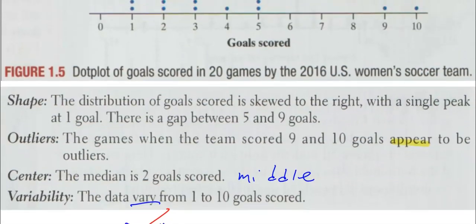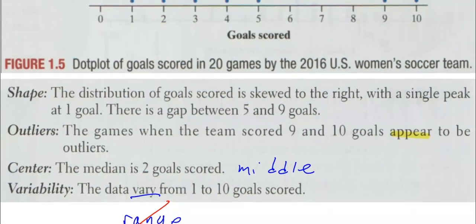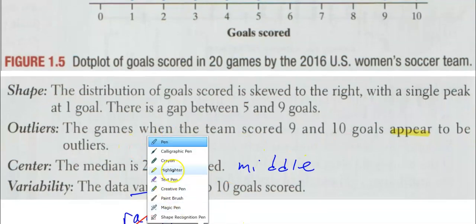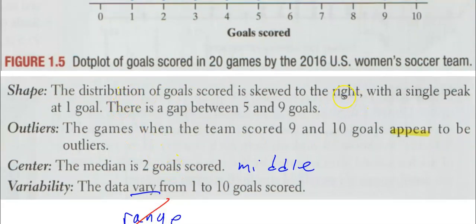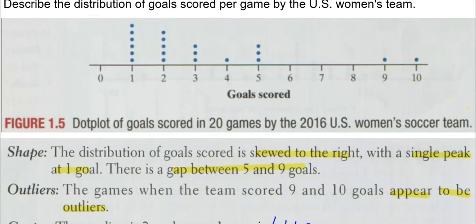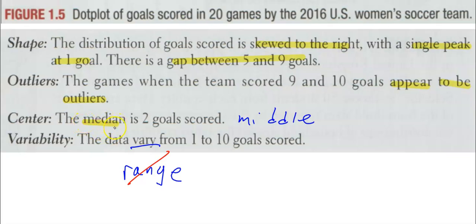Range is a single value that is largest number minus smallest number. So don't use the word range. Do not say the data range from one to ten goals scored. So we described shape, outliers, center, and variability. Notice when we described it, it was skewed to the right. We described a peak and we described gaps in the shape. We described which numbers appear to be outliers—very uncommon values. Median or mean and my data varies—smallest to biggest values. Don't say range.